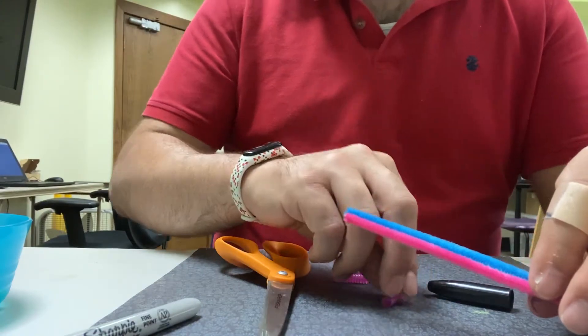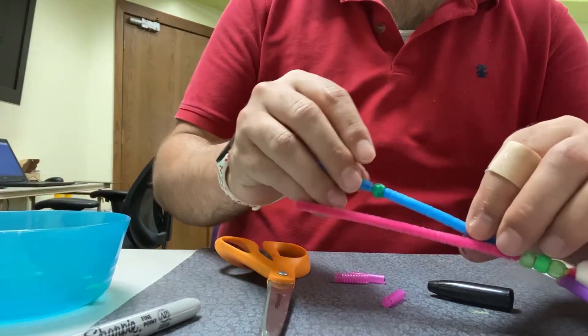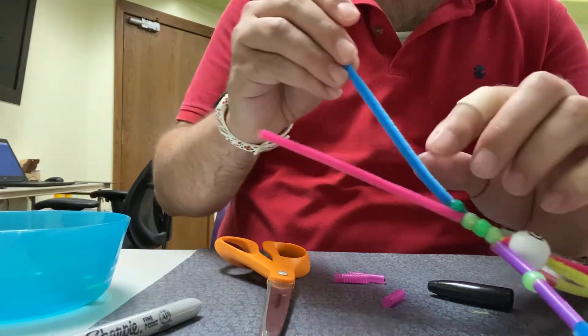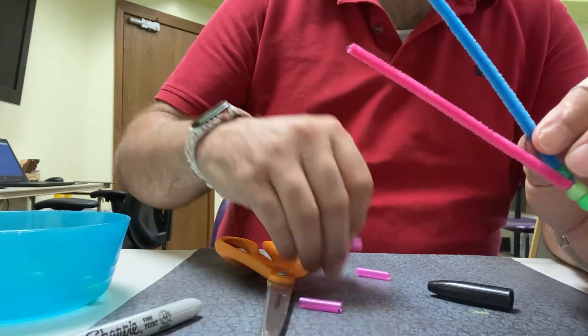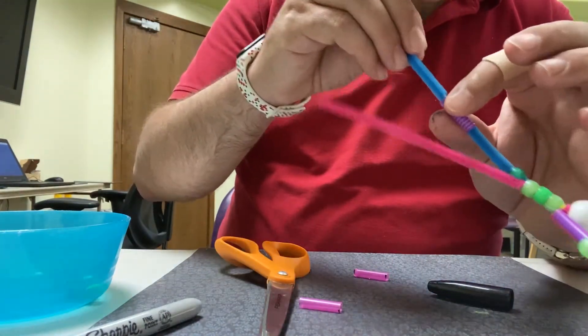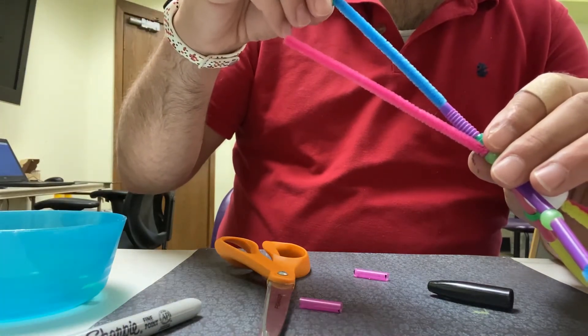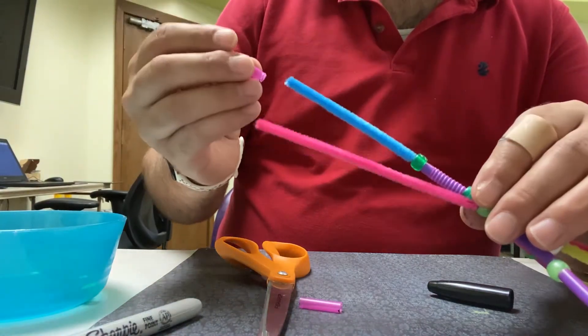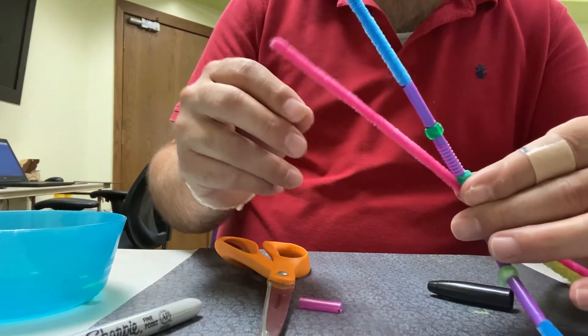Now we're going to go down and do the legs. So we're going to take this one and put a pony bead first. That's going to be our hip right there. Then we're going to take another piece of straw, put it on, followed by another pony bead. That's going to be your knee. Followed by one more piece of straw. Boom. One leg done.